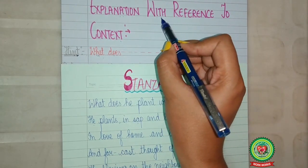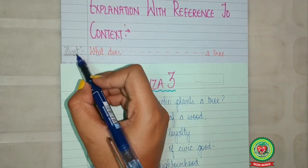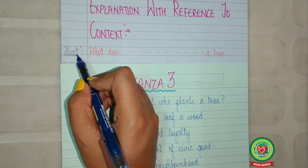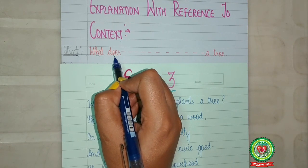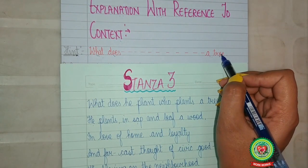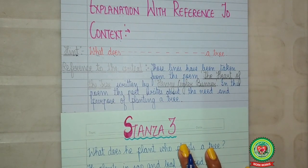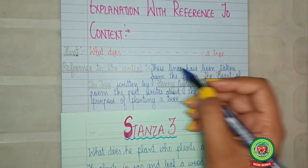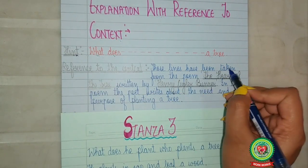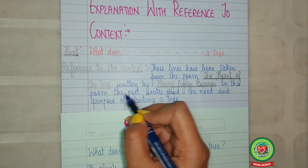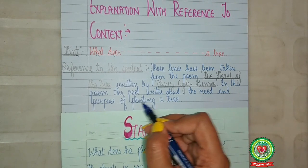We will write down the explanation with reference to context of stanza 3. First, we will write down the hint. It should be written outside the margin line with a pencil and we will underline it. We will write the first two words of the first line of stanza 3 and the last two words of the last line of stanza 3 — that is, 'What does — — a tree?' These lines have been taken from the poem 'The Heart of the Tree' written by Henry Kyler Burner. In this poem, the poet writes about the need and purpose of planting a tree.